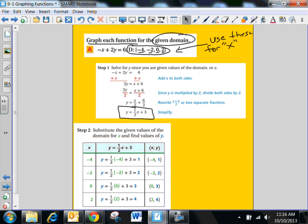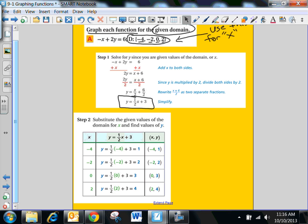is I'm going to plug in specifically the domains that are given. So notice that the domain over here is negative 4, negative 2, 0, and 2. Once I plug in those, I get my x, y coordinate point for each one of them,